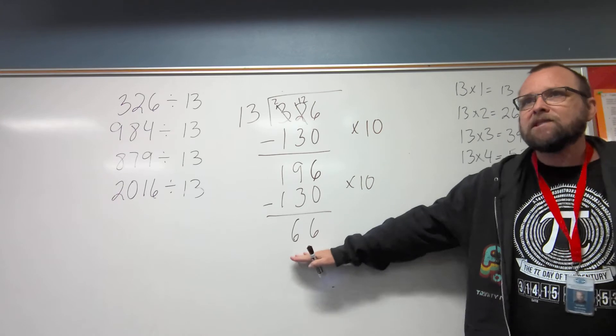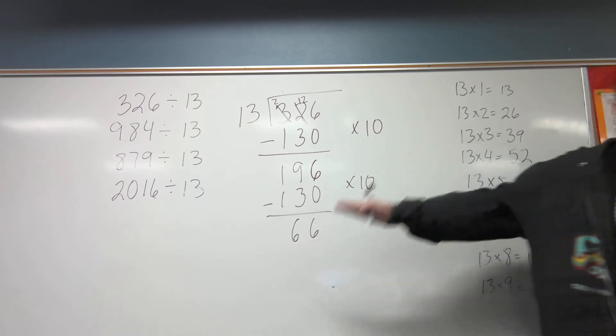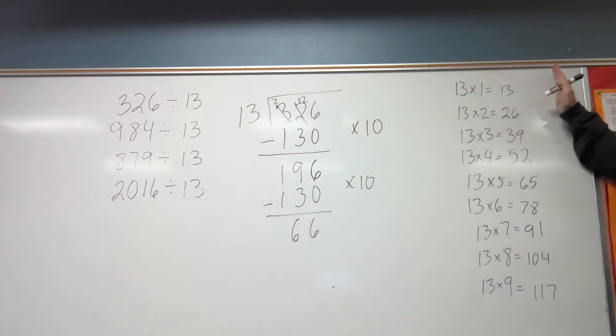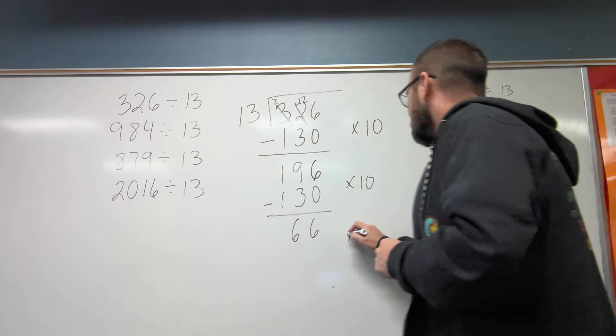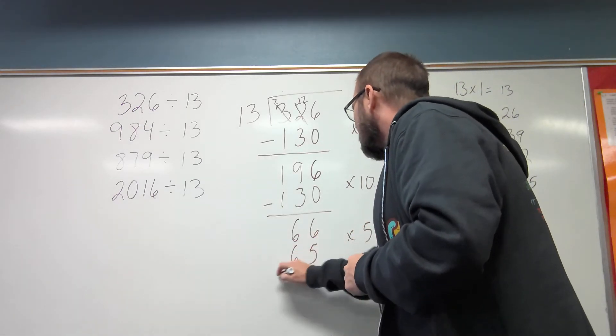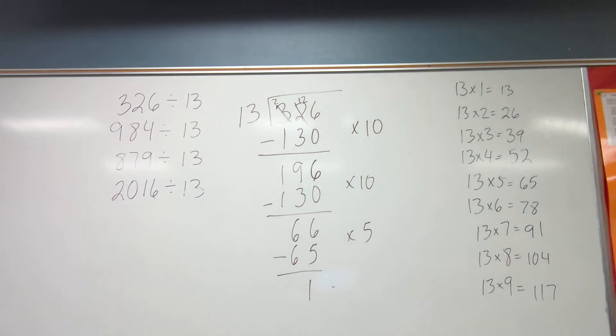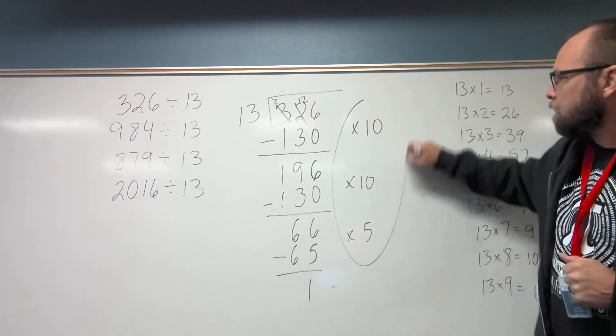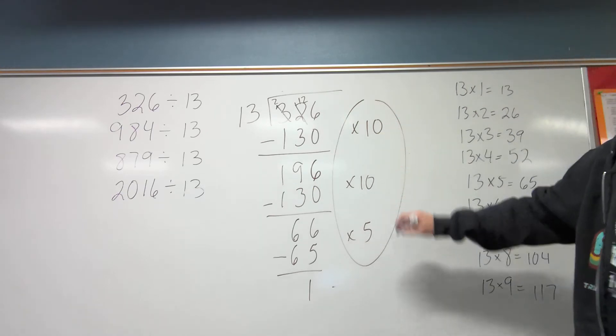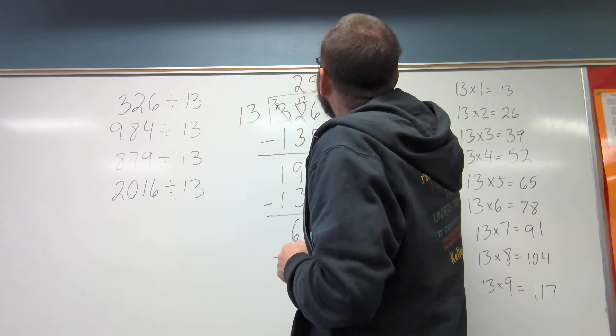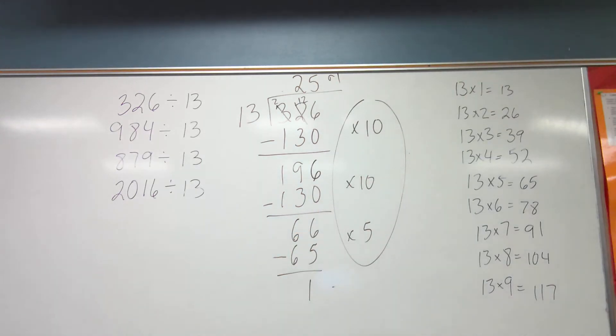Now I can go times 10 again. Because that's 130. And I can subtract 130 from 196. And I'm going to get 66. Can I multiply by 10 again? No, because I'm less than 130. But I can go over here to the most difficult part of division. Multiplying by one-digit numbers. And I find 65. So that's times 5. 65. I subtract. I get 1. Nothing else to bring down. I add these things together. 10, 20, 5. And I have a remainder of 1. Which is what I did when I did the standard algorithm.